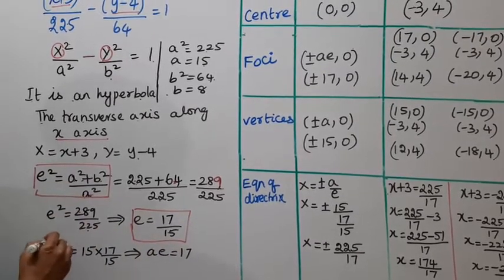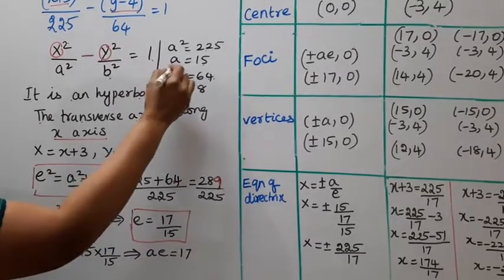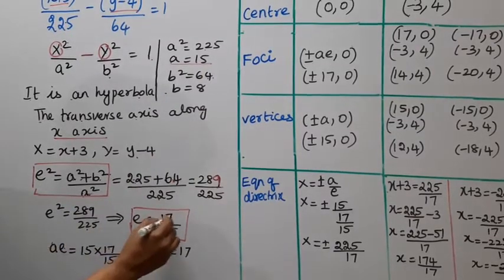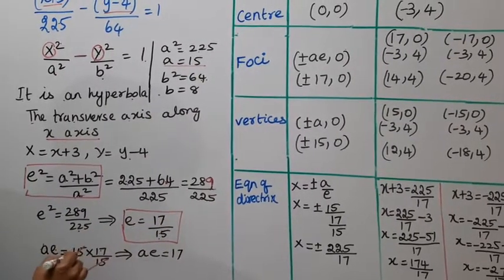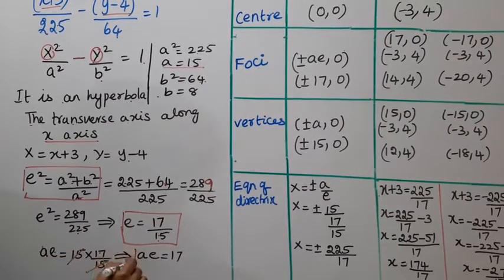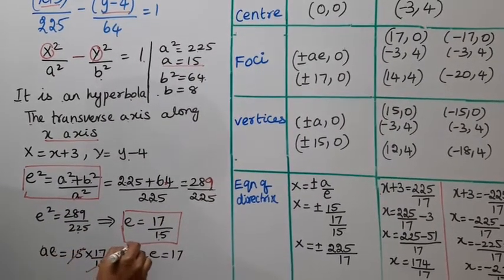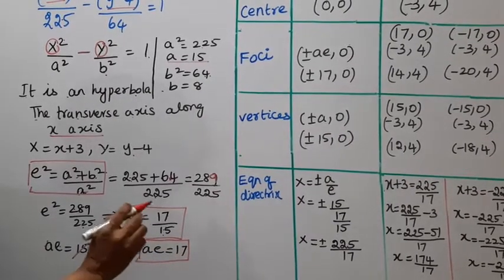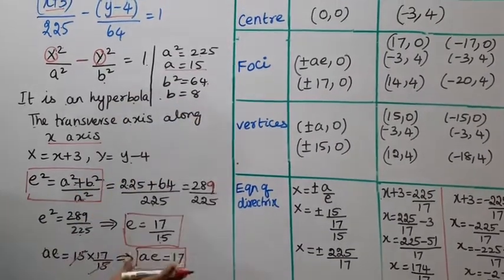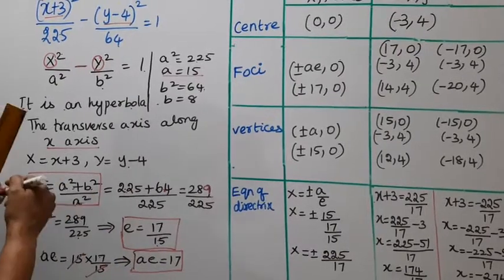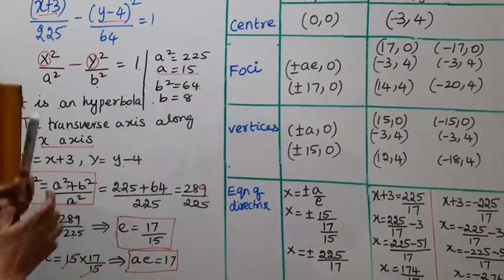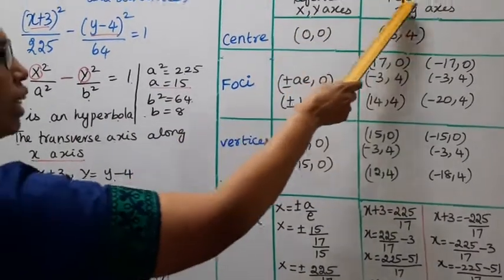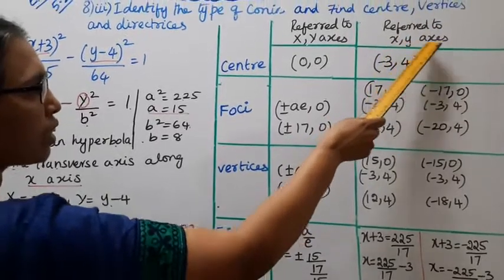Now, ae = a × e = 15 × (17/15) = 17. So ae = 17. We now know all the required values. Capital X and Y refer to the shifted coordinates; small x and y refer to the original coordinates.